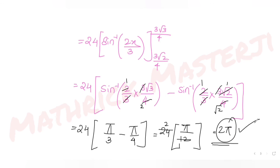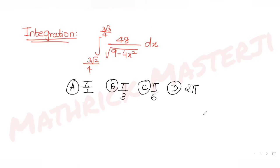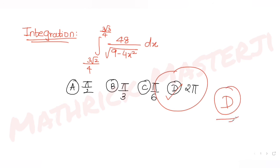Applying the limits, the answer becomes 2π. Looking at the answer choices, this matches option D, so D is the correct answer for this question.